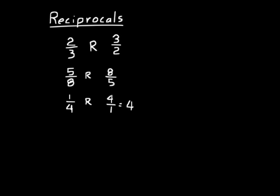Reciprocals have a special result when you multiply them together. For example, two-thirds times its reciprocal three-halves: two times three is six over three times two is six — you get six over six, which equals one. This is always true: when you multiply a fraction by its reciprocal, the product equals one.